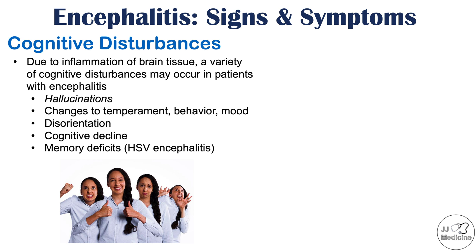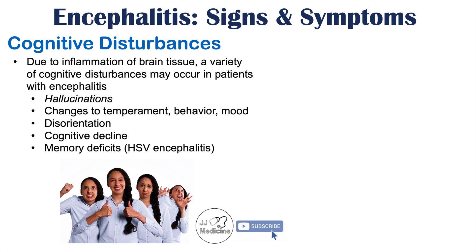Memory deficits can also occur, and this is more likely in herpes simplex virus encephalitis. HSV likes to affect the temporal lobes and parts of the frontal lobes. The temporal lobes are very important for memory functioning, so because HSV affects them, we see memory deficits especially in HSV encephalitis. Depending on the infective cause, there can be slightly different clinical features.